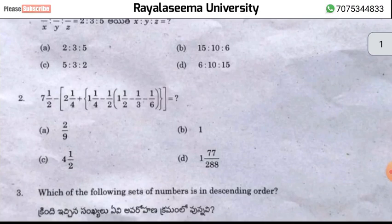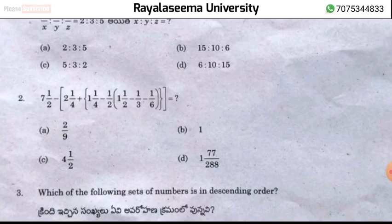The second question is simplification involving internal brackets. The problem includes mixed fractions and normal fractions. Let us start solving the problem step by step.